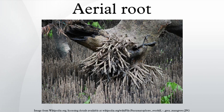Members of the subfamily Taxodioideae produce woody above-ground structures known as cypress knees, that project upward from their roots. These structures were initially thought to function as pneumatophores, but recent experiments have failed to find evidence for this hypothesis.